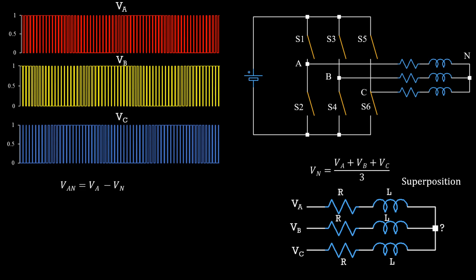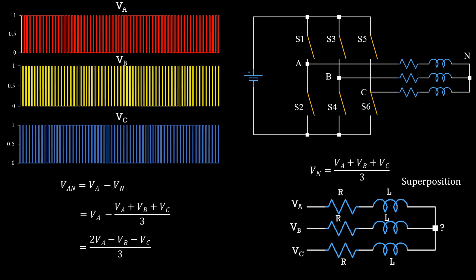But the RL load will see phase to neutral voltage or Van. Van is nothing but Va minus Vn which translates to this formula. We get this weird looking waveform but it is what it is. Also, note that it is an AC voltage.